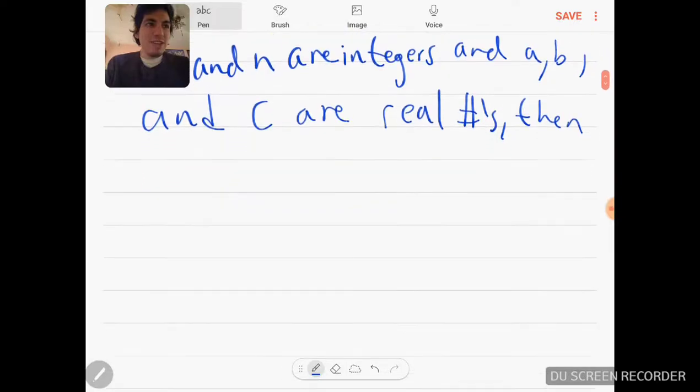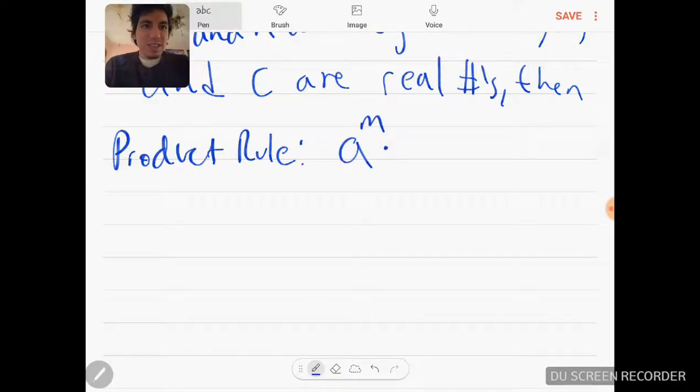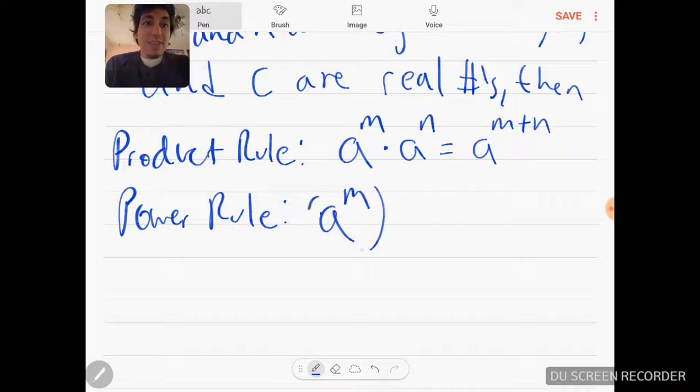Here is a list of every single rule that we just covered in each of those videos on one nice video. You have to remember each one: product rule, which is where you have a to the M times a to the N equals a to the M plus N.